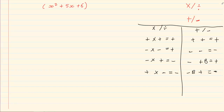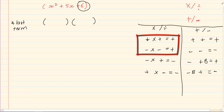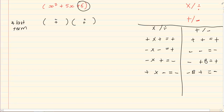When you are doing trinomials, the first step is to look at the last term. The last term's sign is important. Because it's a positive, you know you have two choices: a positive and a positive, or a negative and a negative. Because the last term is created by the multiplication of the two last terms in your brackets, which means you have two choices — plus and plus, or minus and minus.